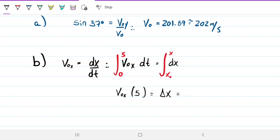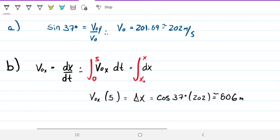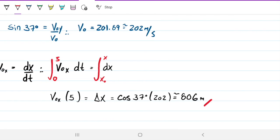So I'm going to have V0X times 5 equals my delta x, which is the distance traveled. And in this case here, my answer is just going to be V0X. Remember V0X is just the cosine of 37 times my V0, which is 202. So the distance traveled is about 806 meters. So it travels 806 meters on the horizontal direction.